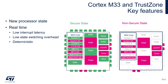Some core registers and peripherals are banked, meaning they exist in two instances — one for secure state and one for non-secure state. There are two SysTick timers, two vector tables, two MPUs, and two stacks with two separate stack pointers. The state switch is driven by hardware, which brings the benefit of real-time execution — low interrupt latency, low switching overhead, and deterministic state switching.